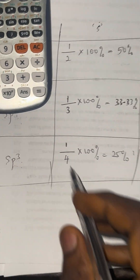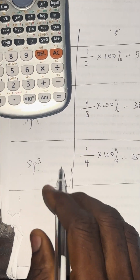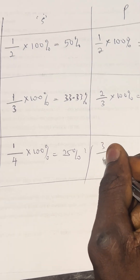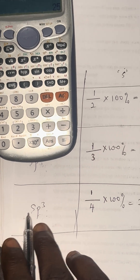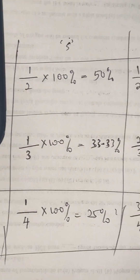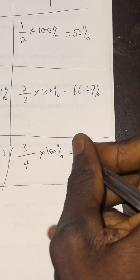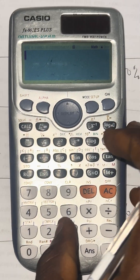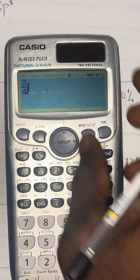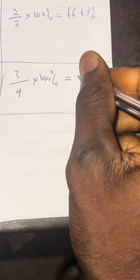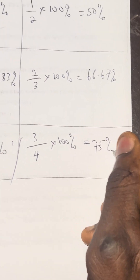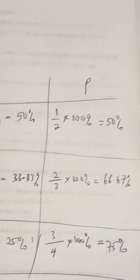Now let's calculate the P character in SP3. The P we have is 3, over the summation of both S and P which is 4. Multiplied by 100%, that gives us 75%. So the P character percentage in SP3 is 75%.